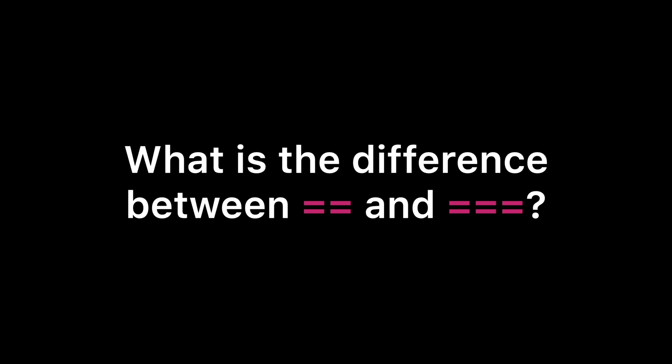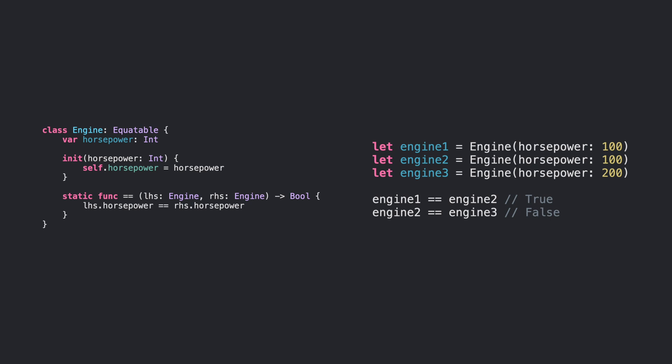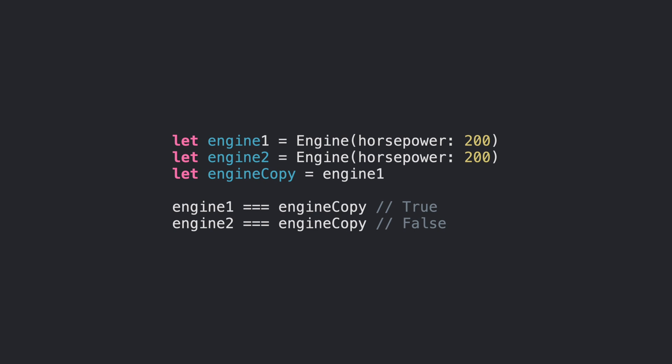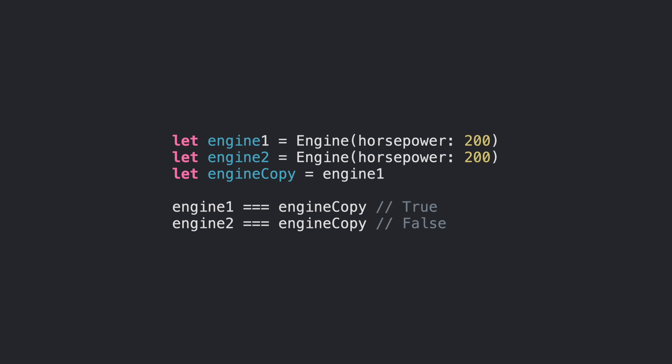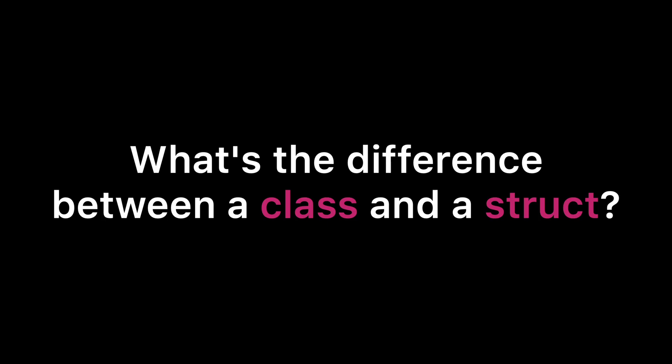What is the difference between == and ===? On the left we have a simple engine class that implements the equatable protocol, which lets us define our implementation for the == operator. We say two engines are equal if the horsepower is the same, so as long as the integer value matches it returns true. With ===, we're asking whether the object on the left and the object on the right point to the same reference — the same place in memory. Engine one compared to engine copy pointing to the same object returns true, but two separate objects return false even if the horsepower is the same.